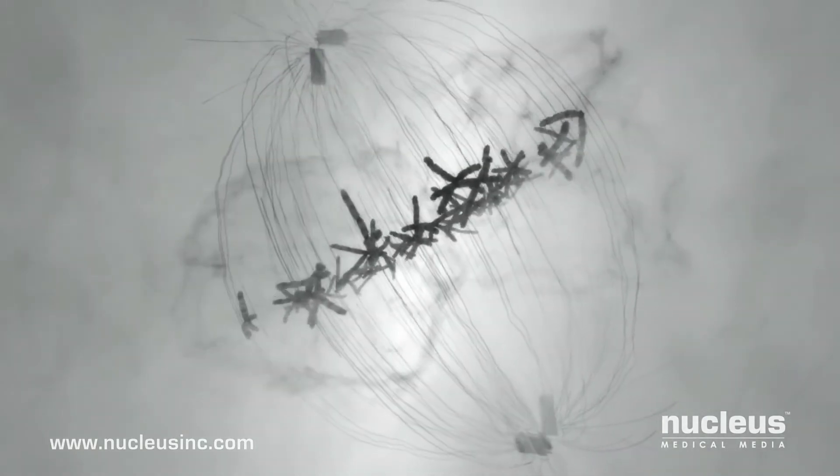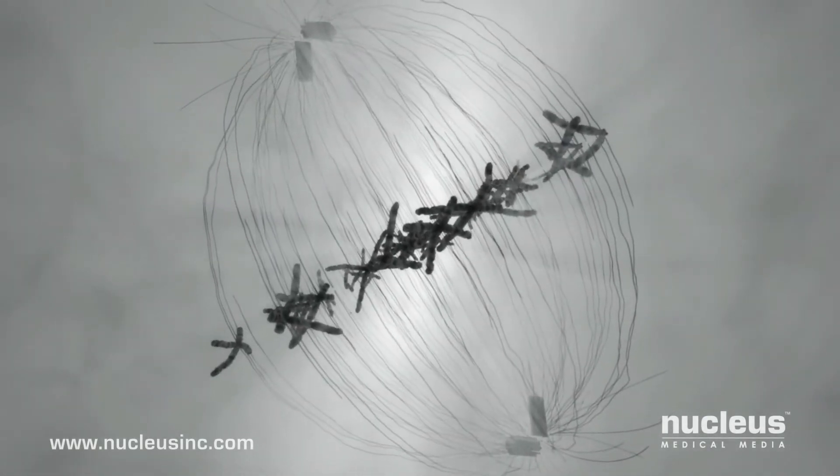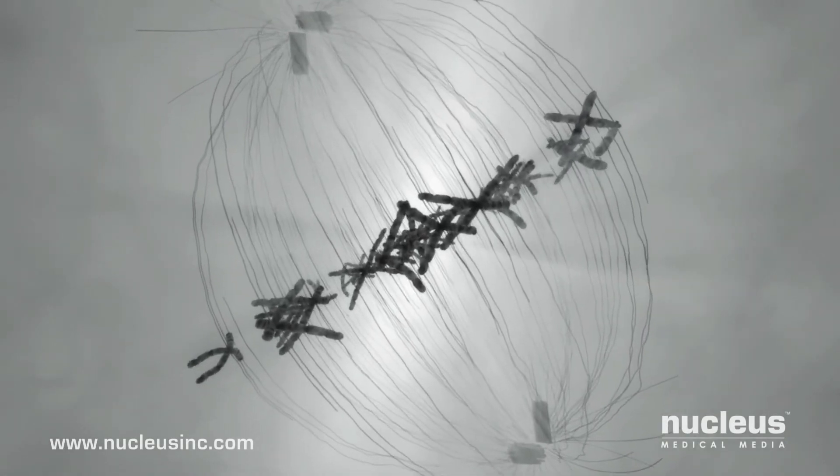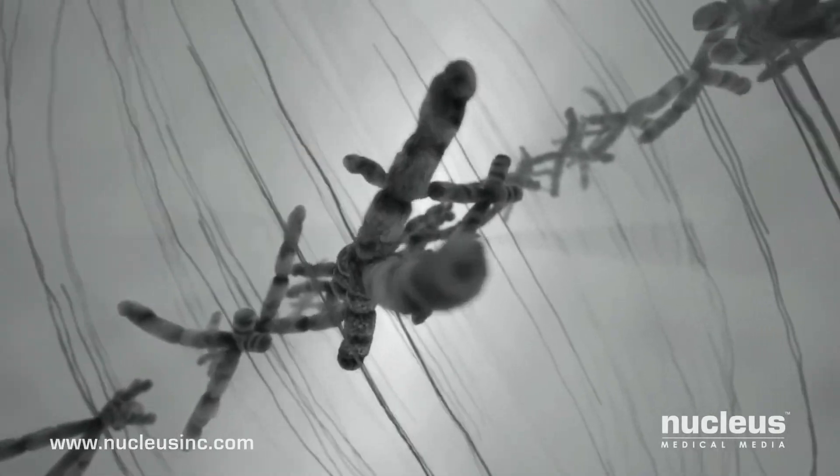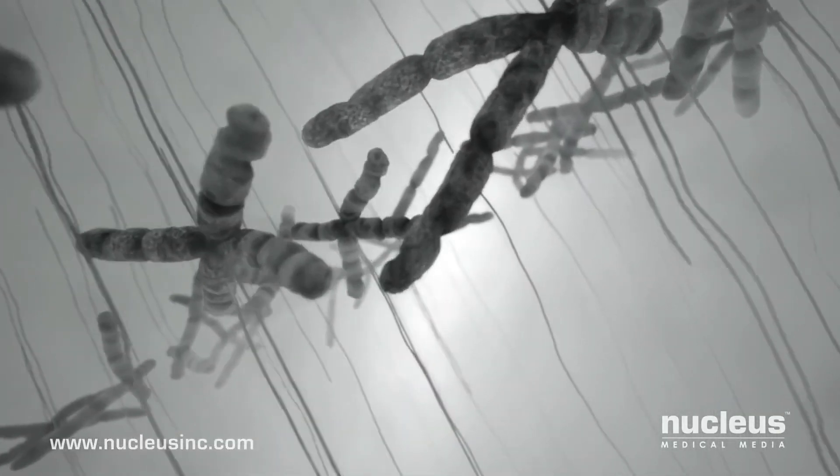At this moment, a unique genetic code arises, instantly determining gender, hair color, eye color, and hundreds of other characteristics. This new single cell, the zygote, is the beginning of a new human being.